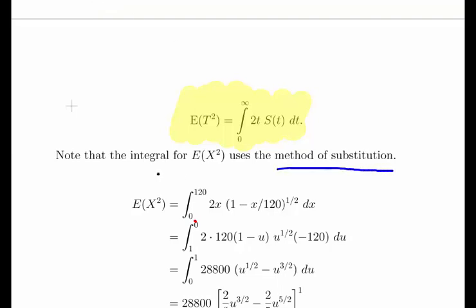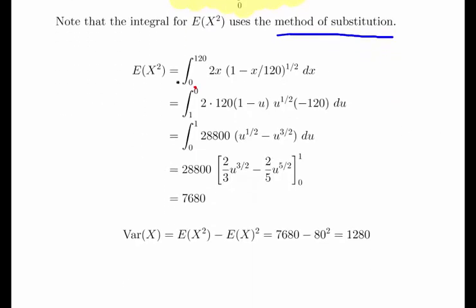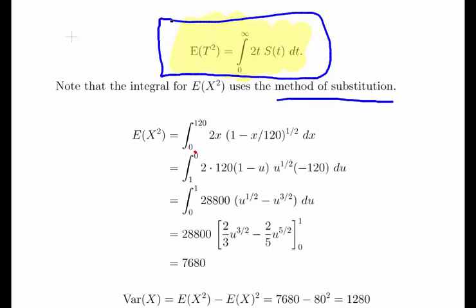I'm going to use the method of substitution again. E(X^2) is the integral from 0 to 120 of 2x times (1 - x/120)^(1/2) dx. So again, u = 1 - x/120, same as before, that's why I'm being very quick about it. Just a quick remark though - I'm going to raise the stakes a bit.